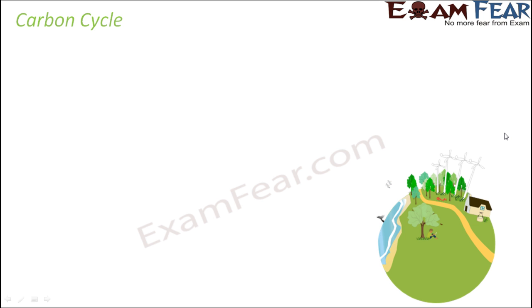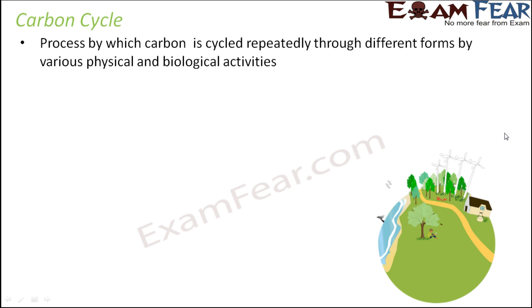The next cycle that we are going to discuss is the carbon cycle. So what is carbon cycle? Now on similar lines as water cycle and nitrogen cycle, this is a cycle by which carbon is cycled repeatedly through different forms by various biological and physical activities. How is carbon getting balanced in the atmosphere, on the earth, that is in the entire ecosystem? How is carbon getting exchanged between the various biotic and abiotic components?